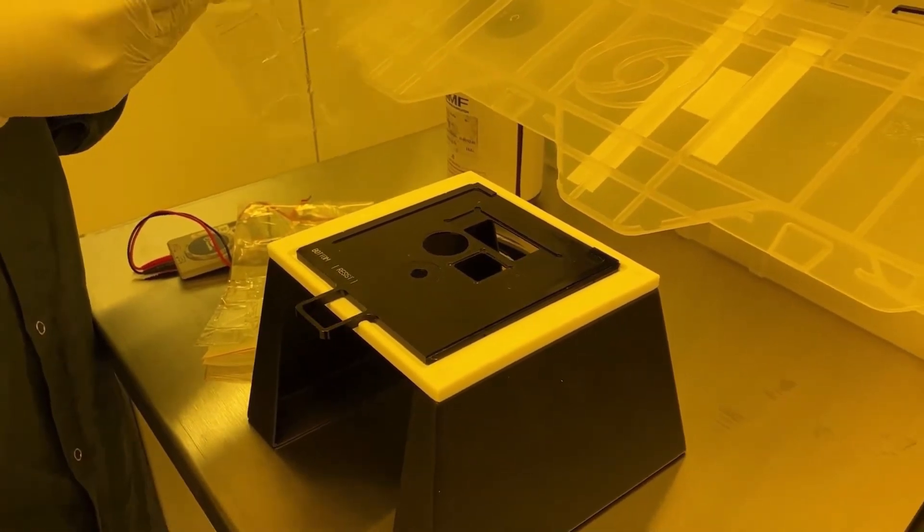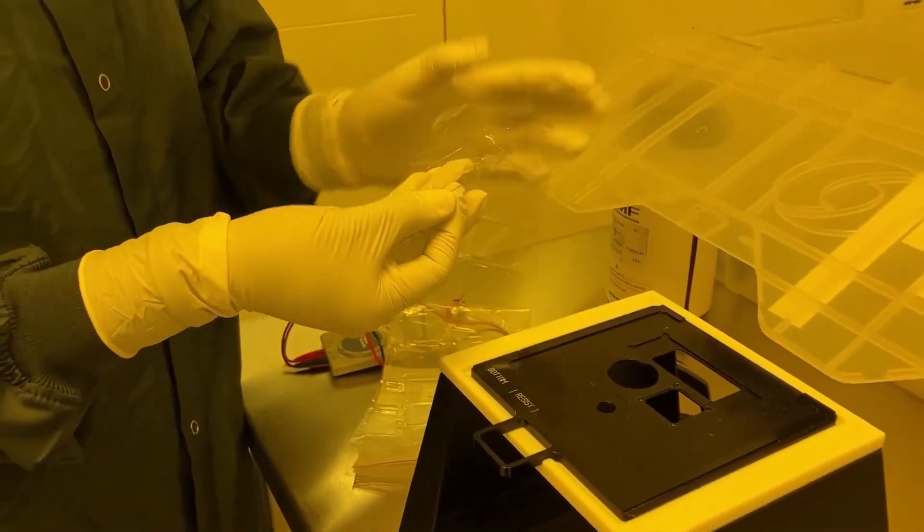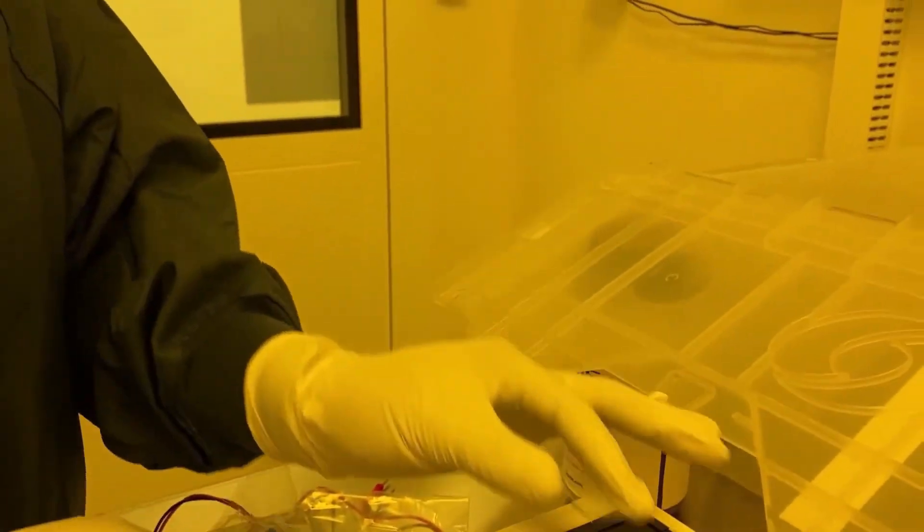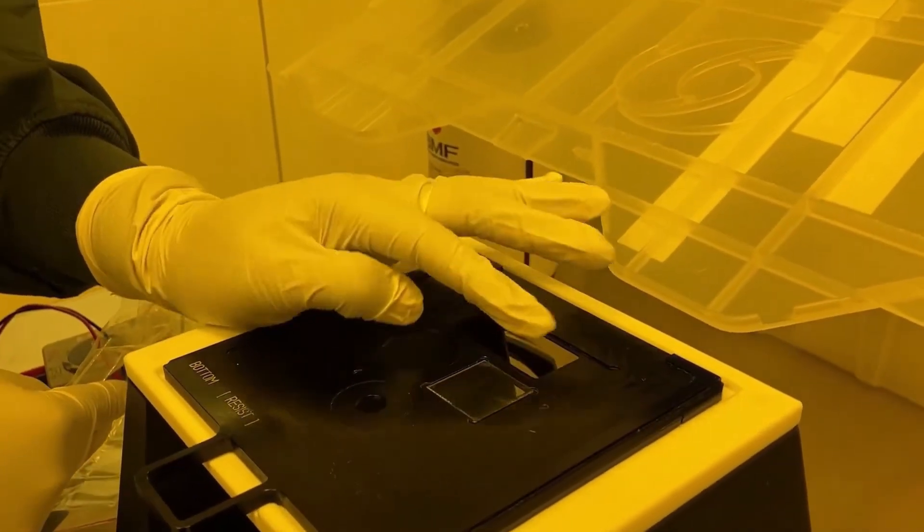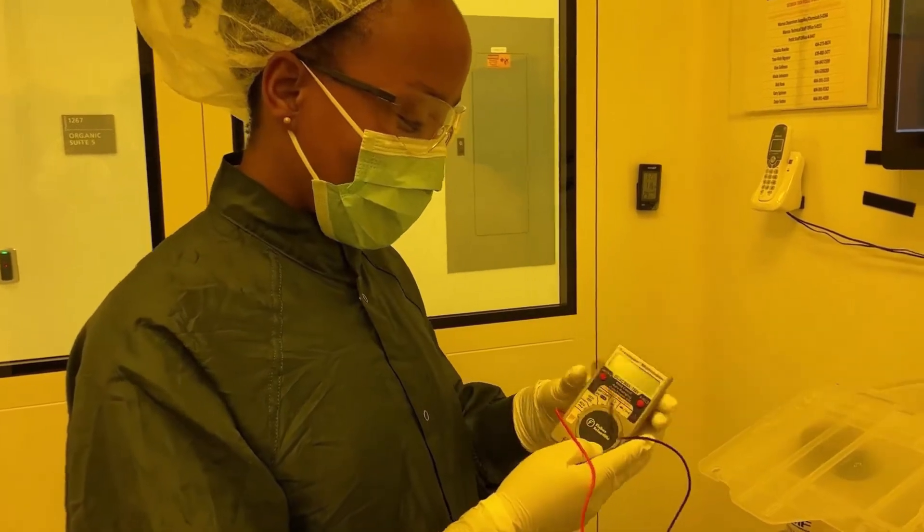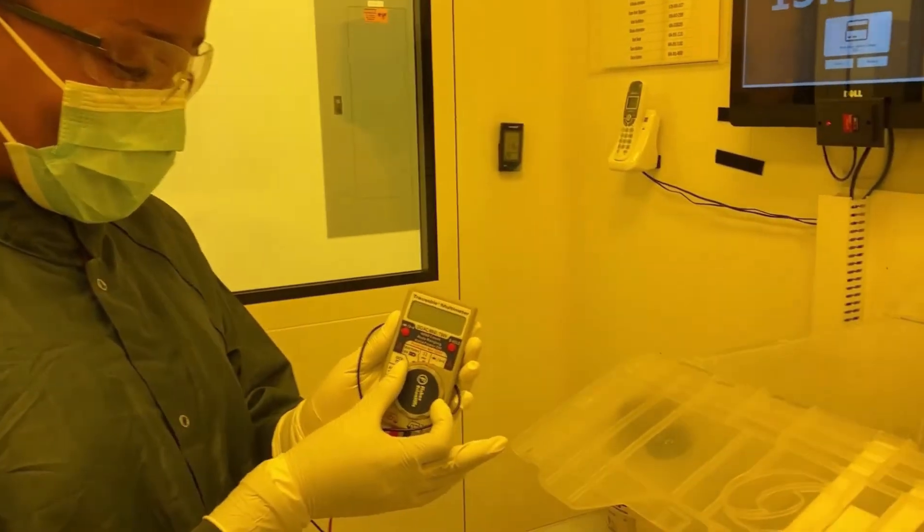Take the substrate and gently place it on the holder. Now you are going to want to turn the multimeter on by placing it on the resistance setting.